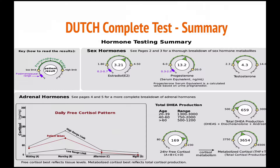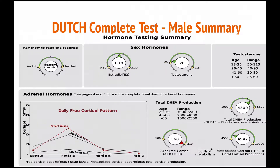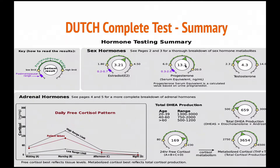This is the first page of the Dutch Complete test. This is a female hormonal sample and the key thing here is it's just a general overview of the test, and in the following pages it goes into a lot more detail about the adrenal hormones and the sex hormones. This is the same page but it's the male version, so you can see the testosterone levels are a little bit low. On the female version we've mainly focused on the progesterone and estrogen on the summary page.